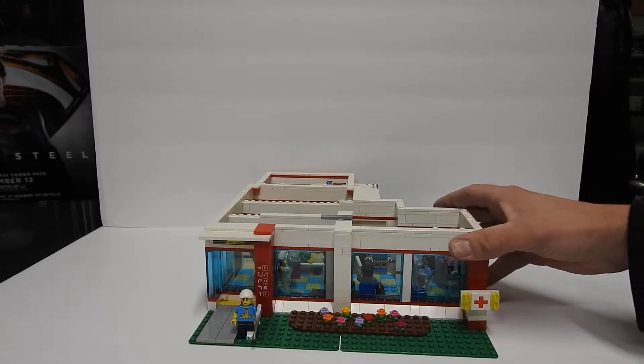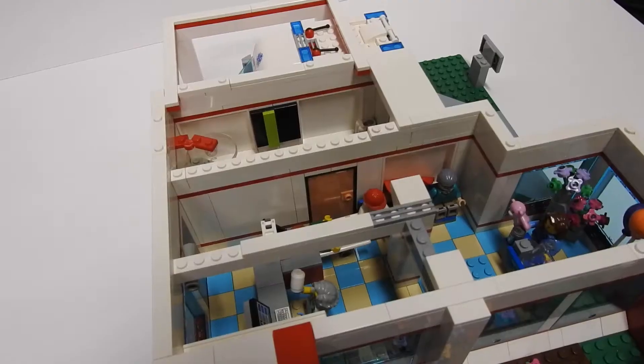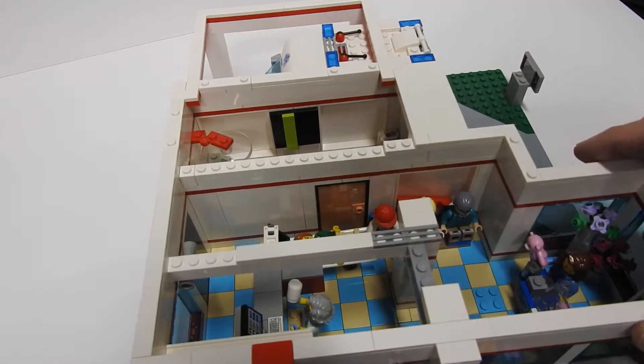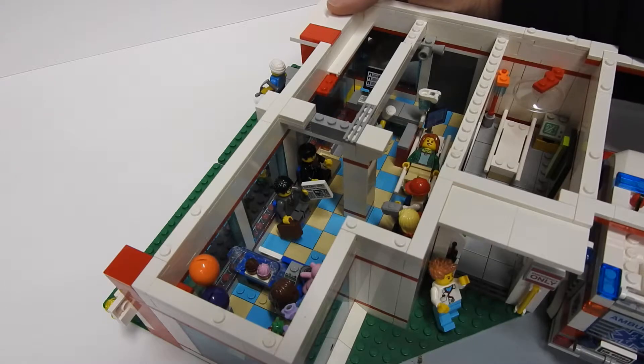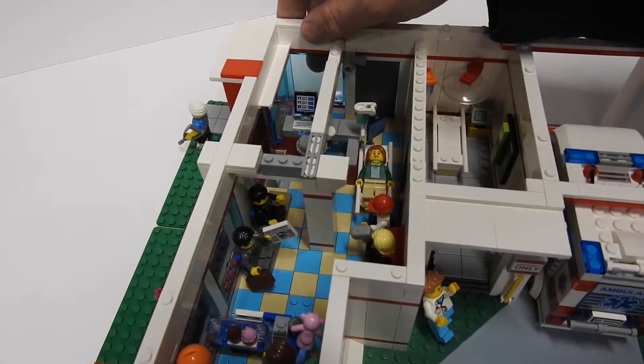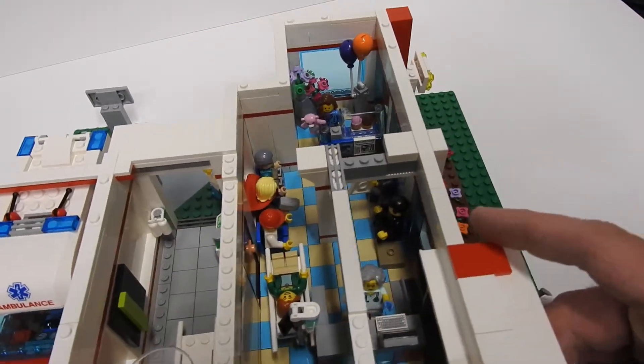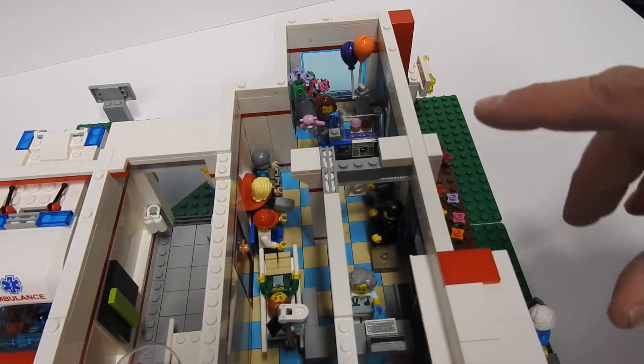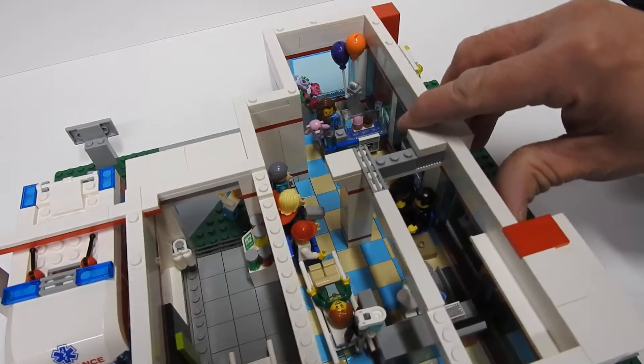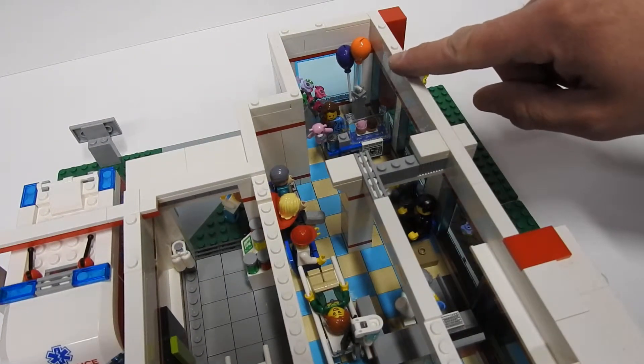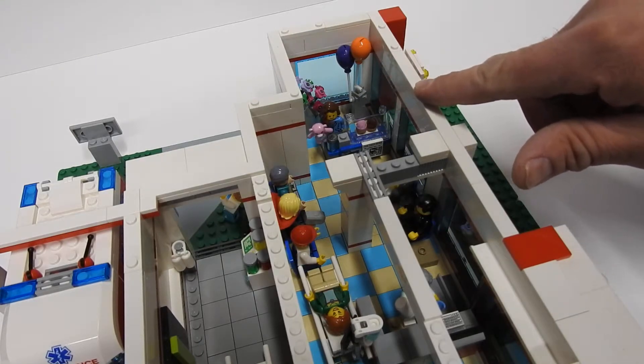So this is the first floor. When you come in through the sliding door, you've got a reception desk here. You've got some chairs for waiting over here too. And you've got a gift shop with some flowers, teddy bears, balloons, little treats, and newspapers.